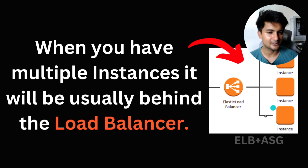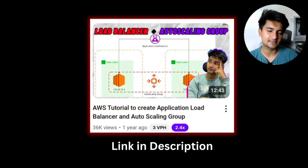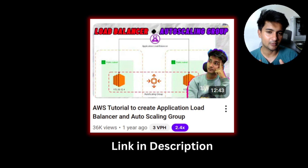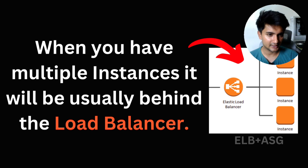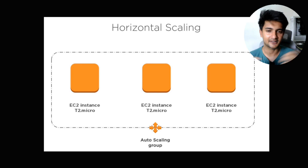I have explained how to create a load balancer and Auto Scaling Group in a separate video — the link is in the description. As a DevOps engineer, you need to understand what a load balancer is, how to create it, what an Auto Scaling Group is, and how to connect them together. Load balancers are also used in Kubernetes, which is something more advanced. Horizontal scaling means adding more servers so they can have more CPU and RAM to handle incoming traffic.